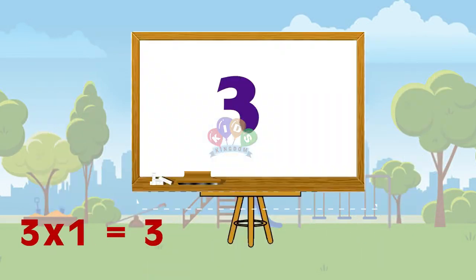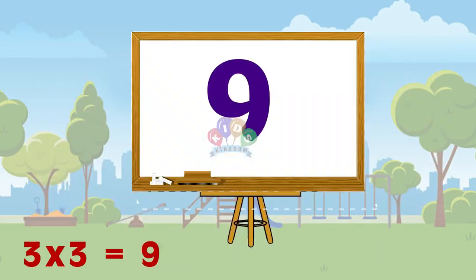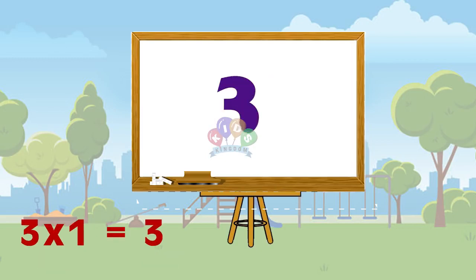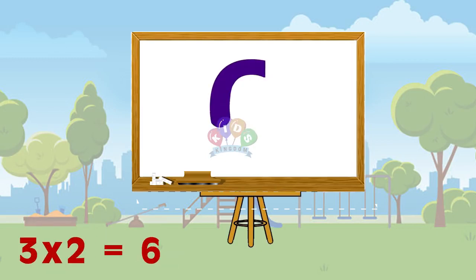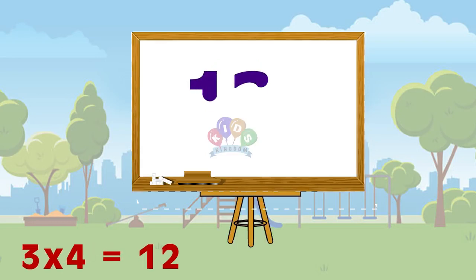Three 1s are 3, 3 2s are 6, 3 3s are 9, 3 4s are 12. Three 1s are 3, 3 2s are 6, 3 3s are 9, 3 4s are 12.